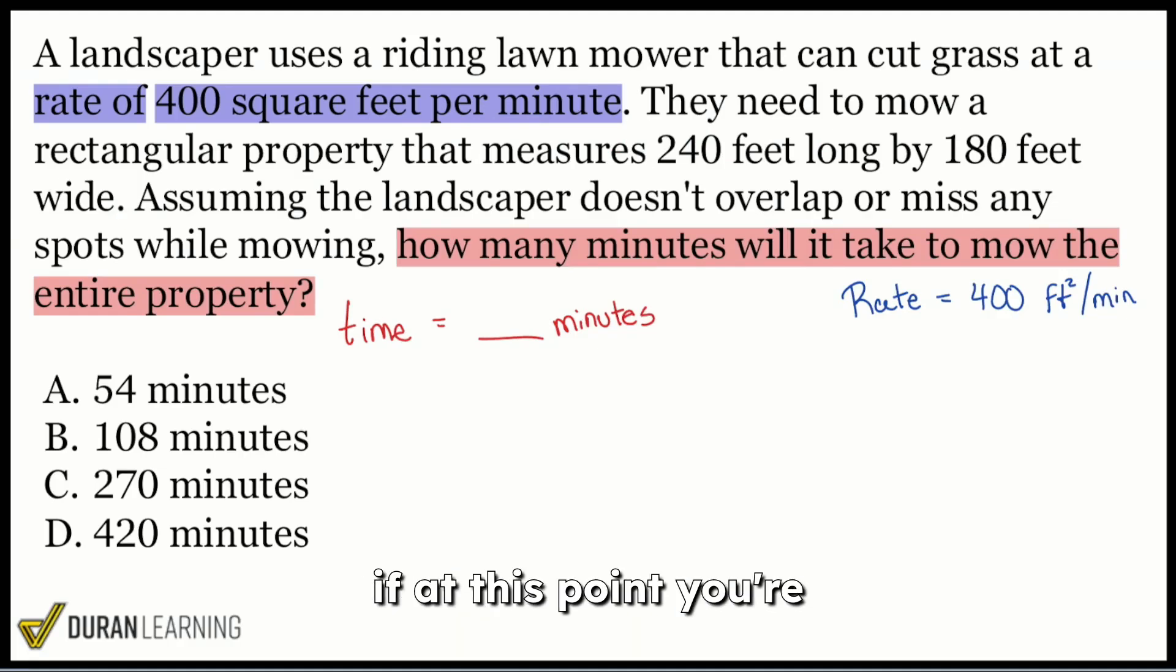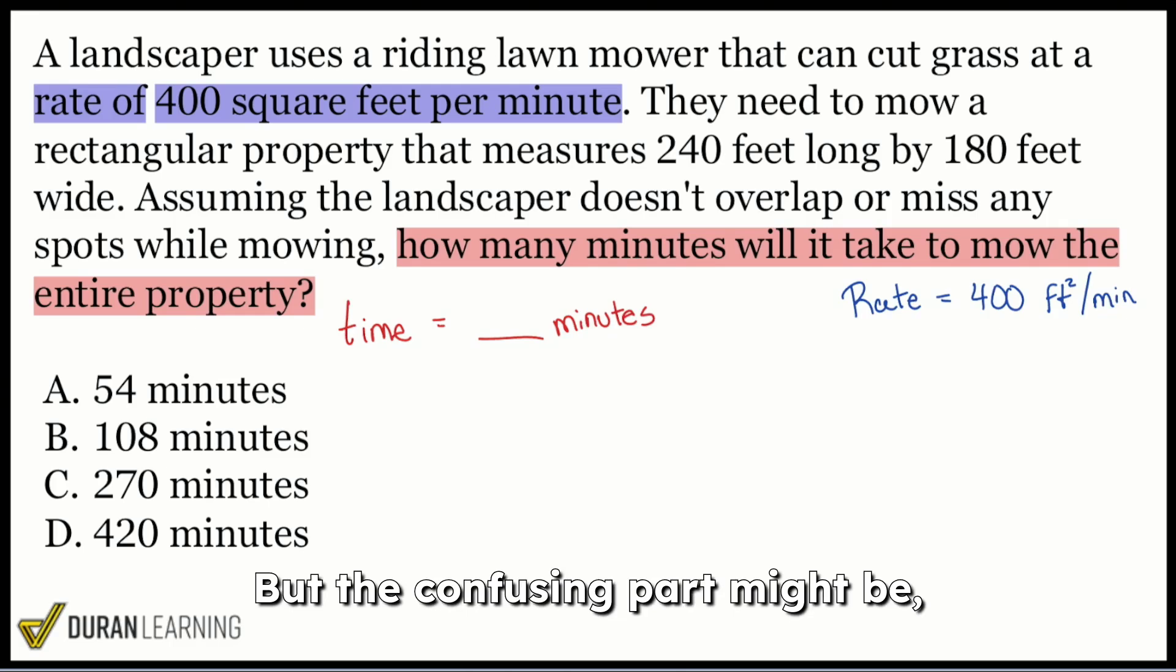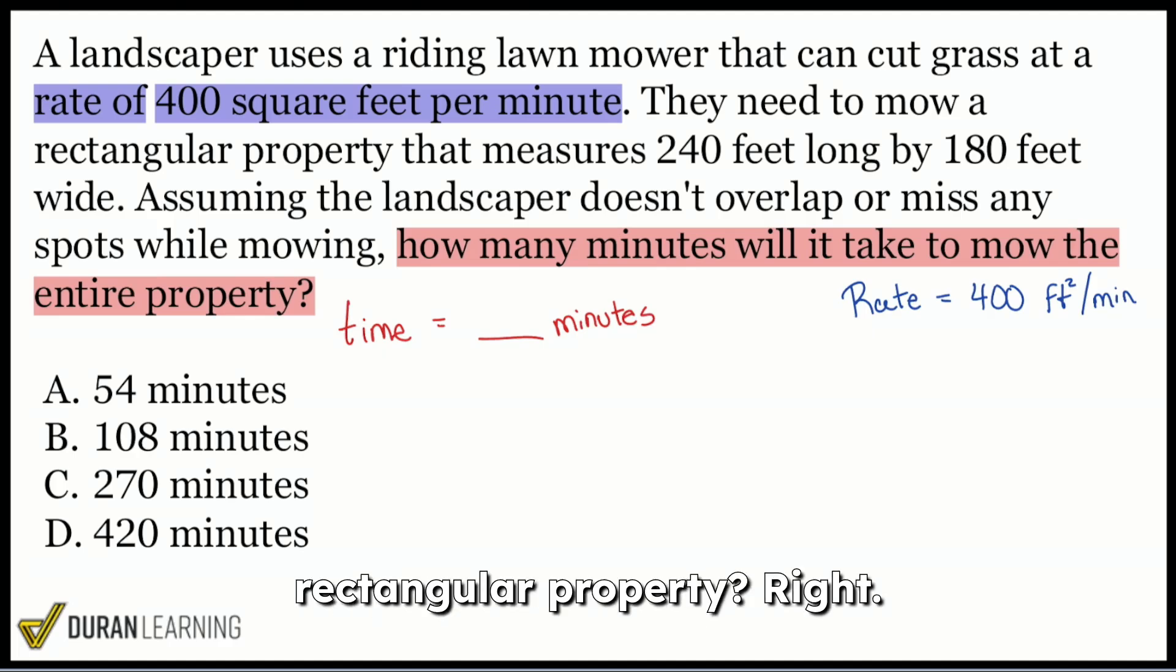They need to mow a rectangular property that measures 240 feet long by 180 feet wide. Now, if at this point you're thinking, hold on, coach, I see that we have a time that we're looking for. We have a rate given to us right here. Isn't this a distance rate time question? And well, you're not wrong. Yeah, this is a distance rate time question. But the confusing part might be, why are we talking about a rectangular property?